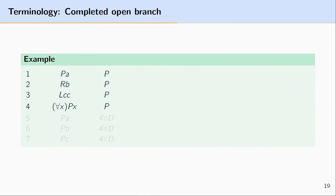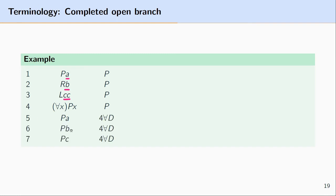Let's look at two more examples to illustrate these three conditions. Imagine a truth tree with four propositions where the only formula that can be decomposed is the fourth — the universally quantified ∀x Px. We need to decompose line four for every name found in the branch: a is at line one, b is at line two, and c is at line three. So we decompose the universal quantifier three times — once for a, once for b, and once for c.